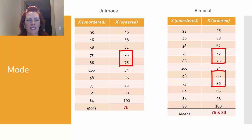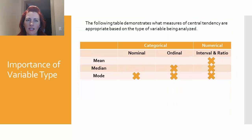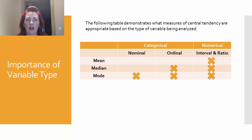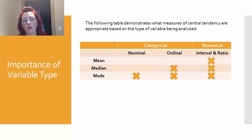The table here demonstrates the measures of central tendency that are appropriate based on the type of variable being analyzed. Assuming normal distributions and no skew for numerical data, we can use all three measures — mean, median, and mode — with the mean being most common. However, we often report all three for numerical data. For nominal categorical data, we can only use the mode. For ordinal data, we can use both the median and the mode as measures of central tendency.